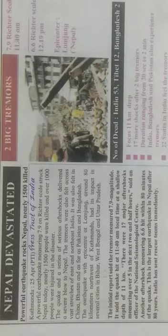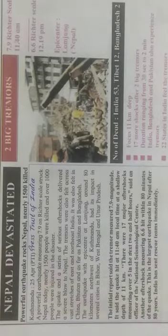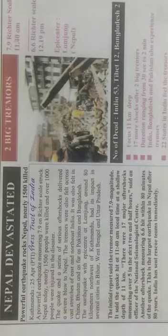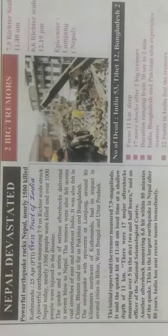What kind of damage is seen because of the earthquake? Around 1500 people were killed and around 1000 people are injured. That was the major damage to human life.